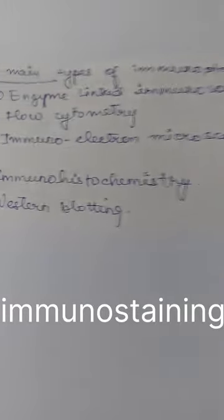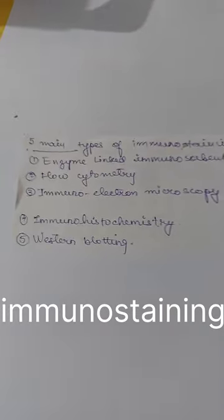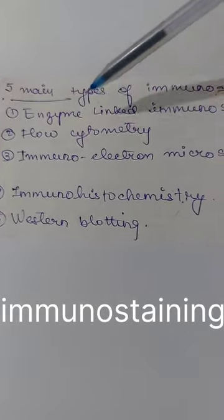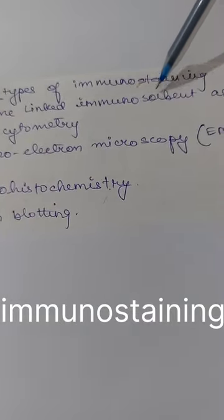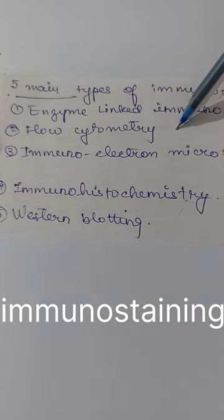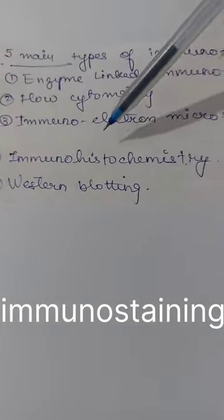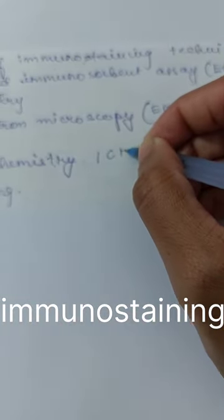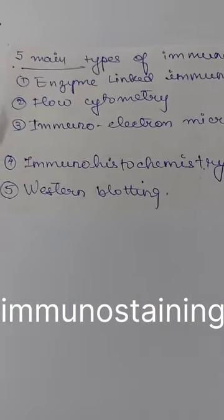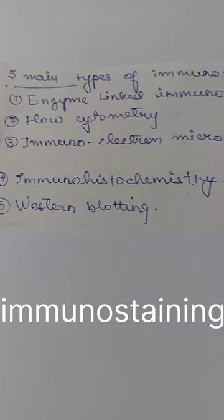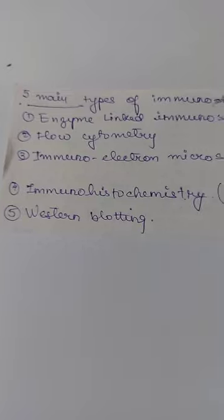The last topic is the five main types of immunostaining techniques, relevant for MBBS, DMLT, and microbiology exams. First is ELISA — enzyme-linked immunosorbent assay. Second is flow cytometry. Third is immuno electron microscopy, also called EM immunolabeling. Fourth is immunohistochemistry — IHC. Fifth is western blotting. So the five main types of immunostaining techniques are: ELISA, western blot, IHC, flow cytometry, and immuno electron microscopy. That's all for today's video.